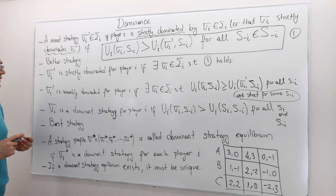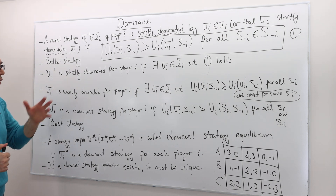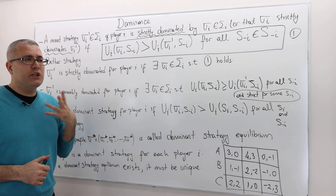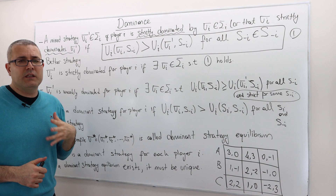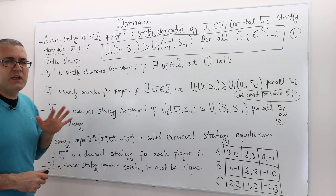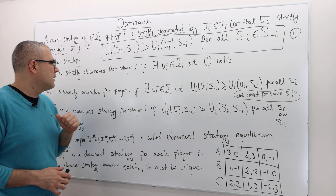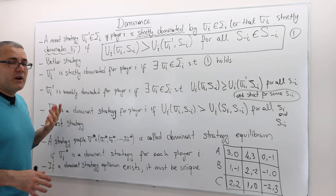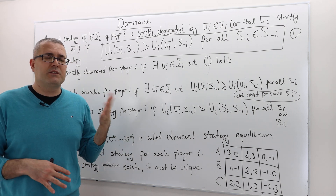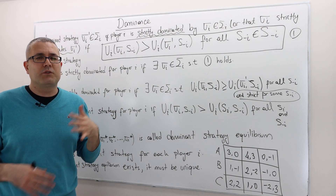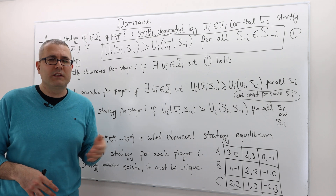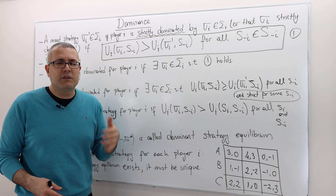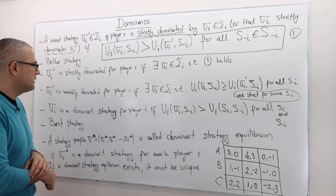Although we define weak domination, we don't really use it so often in game theory as a solution concept because it has some flaws. So stick to strict domination. Some textbooks just call it domination — strategies dominating or dominated — without calling it strictly dominated. I just wanted to emphasize the strictness.